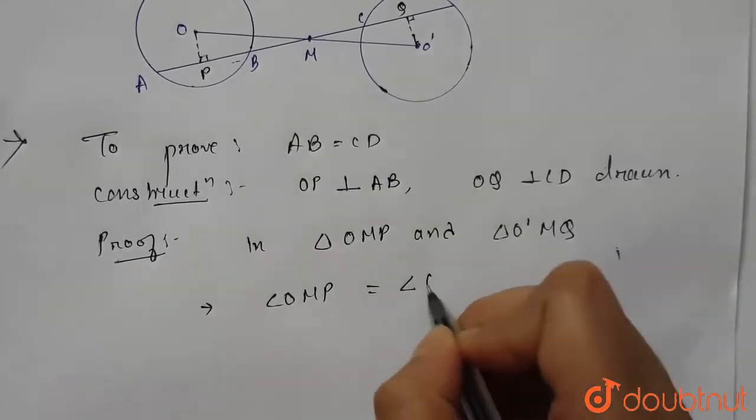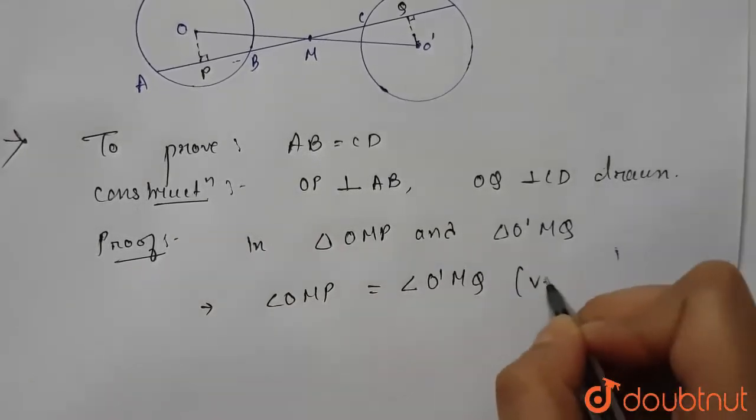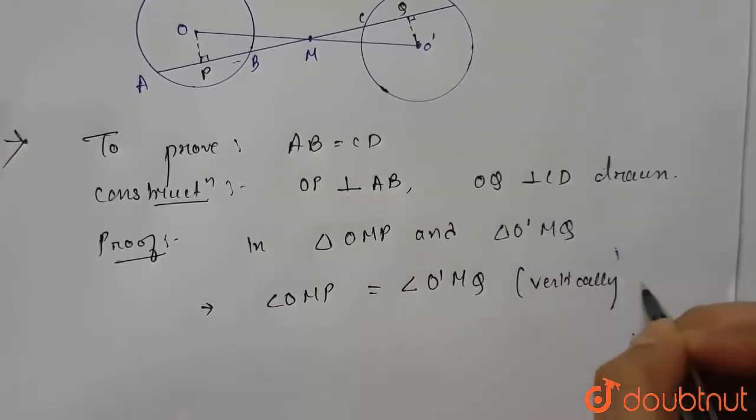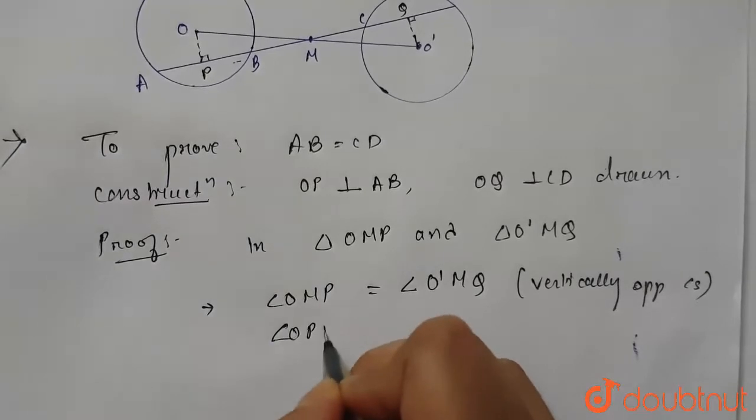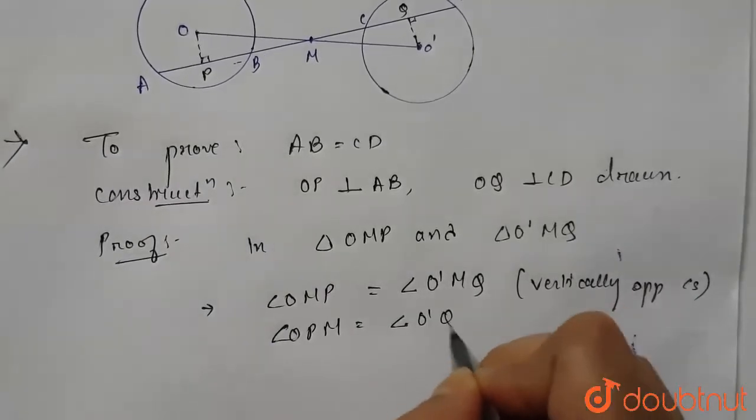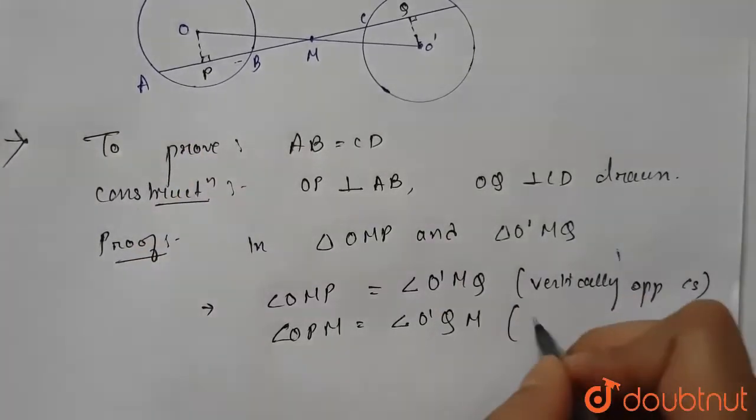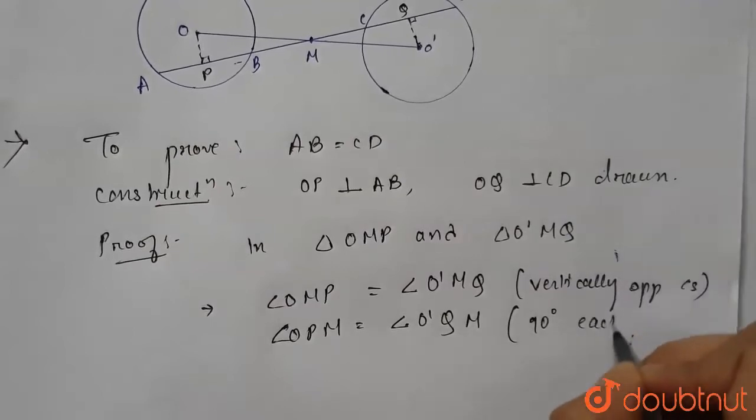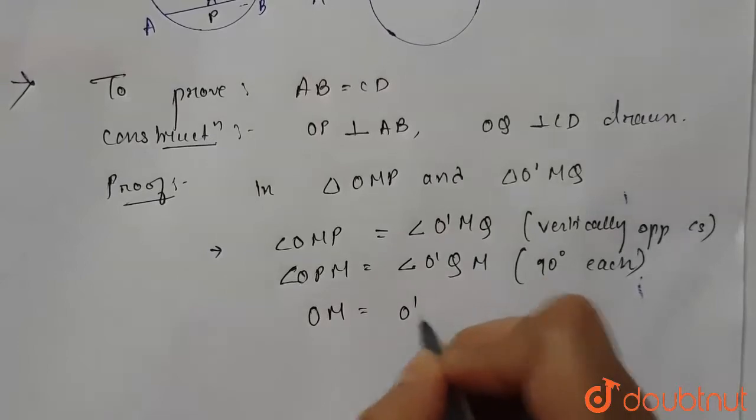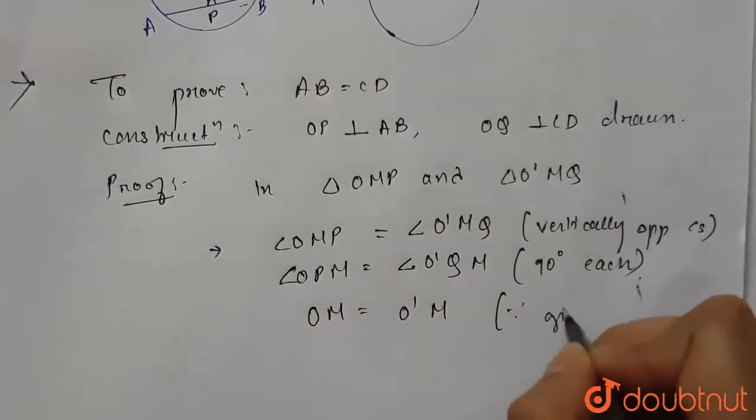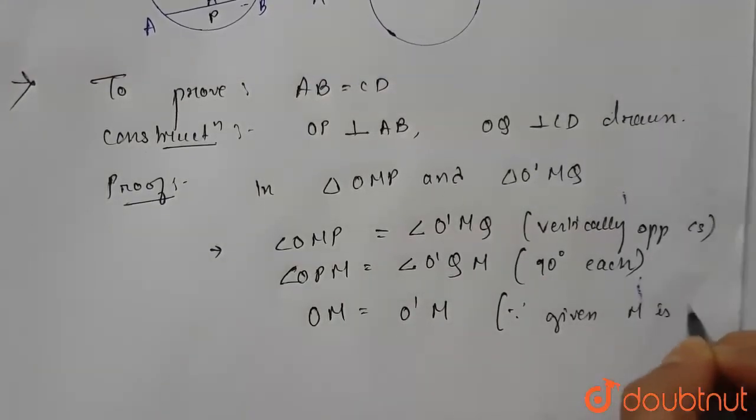...angle OMP is equal to angle O dash MQ because vertically opposite angles. Then angle OPM is equal to angle O dash QM because we have drawn so this will be 90 degrees each. And OM is equal to O dash M since given M is the midpoint.